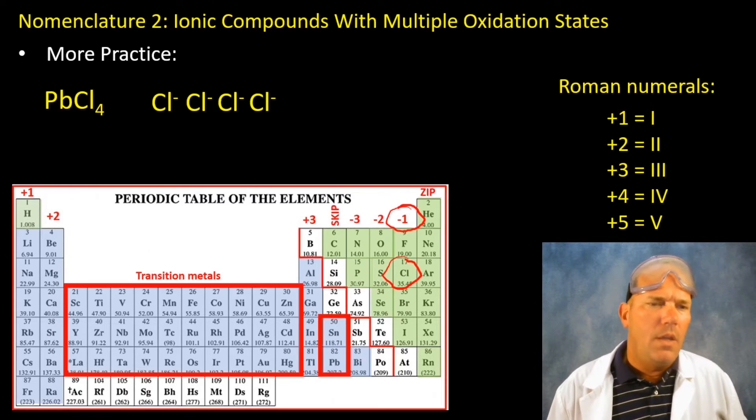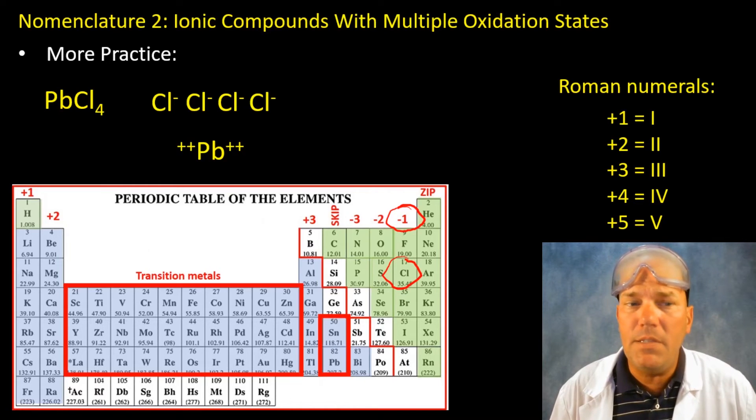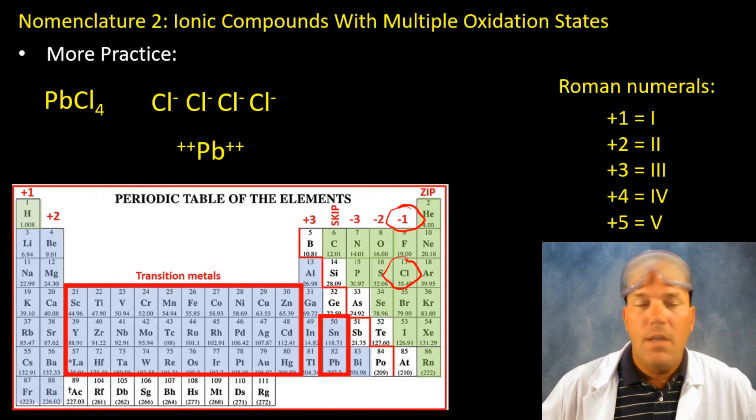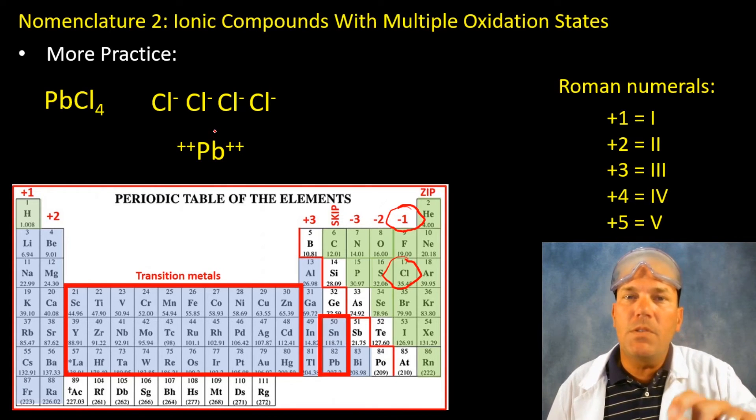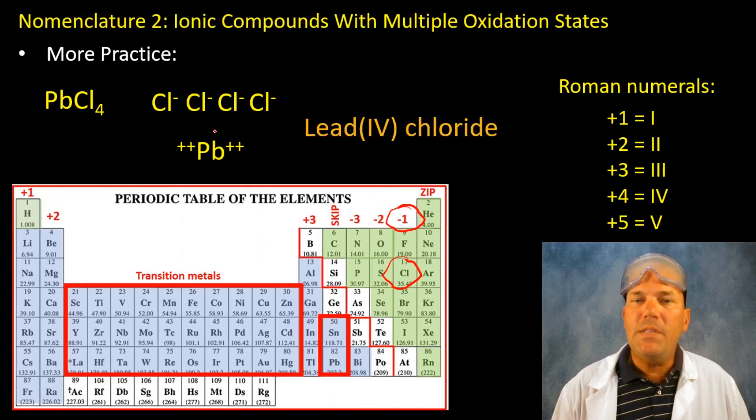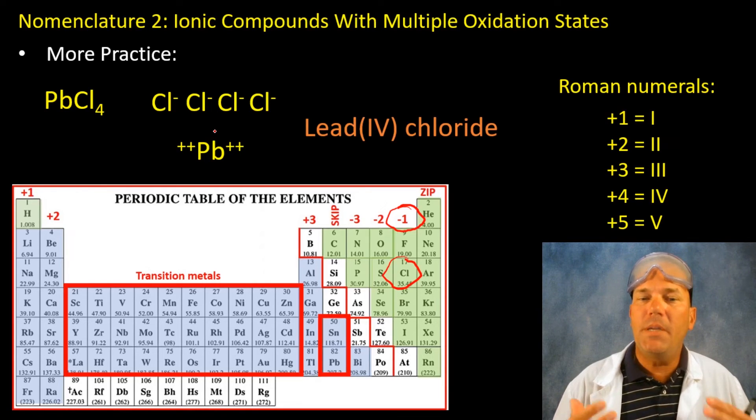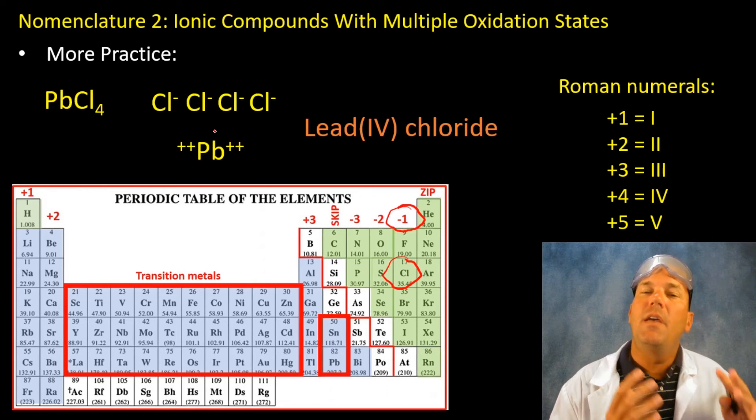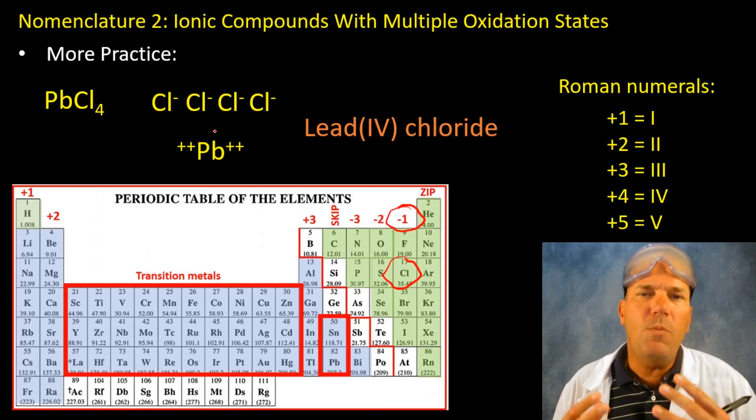Next I'm going to look at the fact that if this is balanced, and it is, and there's only one lead, that this lead must be lead four. And the four refers to the positive charge of the cation, the lead. So this is lead four chloride, because the lead has a positive four charge, and the chlorine has a negative one. And we started with what we knew.